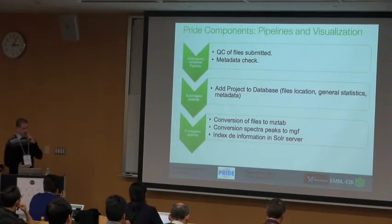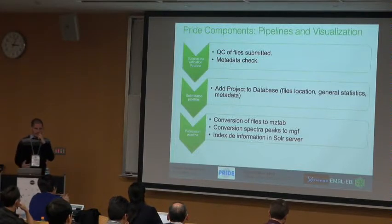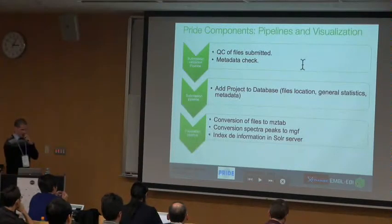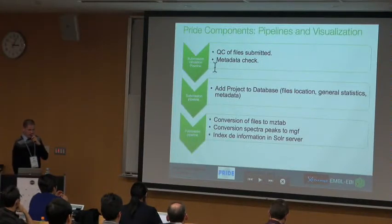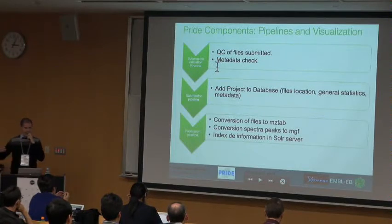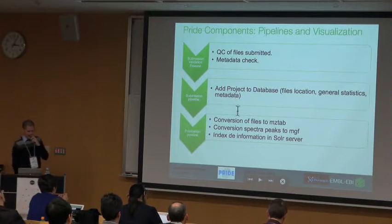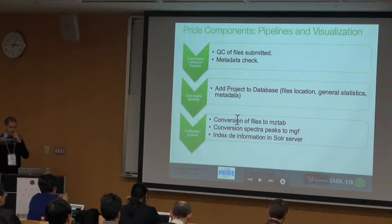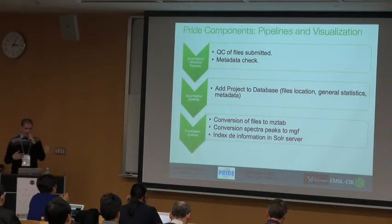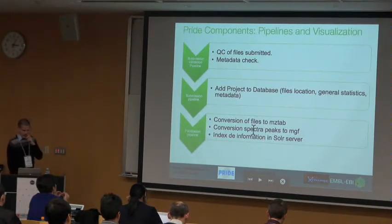The pipeline to commit all files to PRIDE is based on three main components. First, the submission validation pipeline checks all quality measures against the files the submitter has provided. Then the submission pipeline adds all project information to a database. Finally, all files — whether PRIDE-Inspector format or mzIdentML — are converted to mzTAB and MGF, and all this information is indexed in the Solr server.